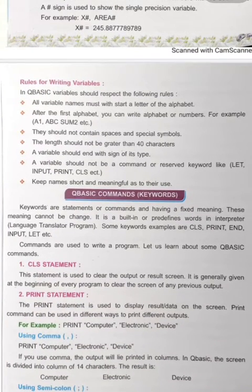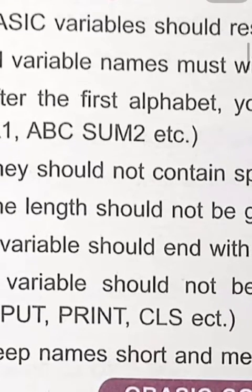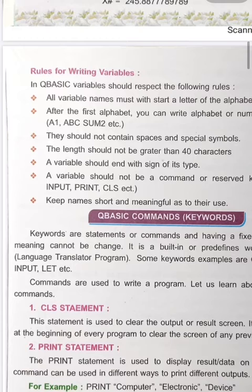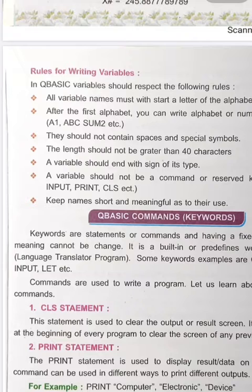The rules for writing variable names: all variable names must start with a letter of the alphabet. After the first alphabet, you can write alphabets and numbers — for example, 'abc' or 'sum2'. Variable names should not contain special symbols. They should not contain spaces or any special symbol like @, #, etc. The length of a variable name should not be greater than 40 characters.